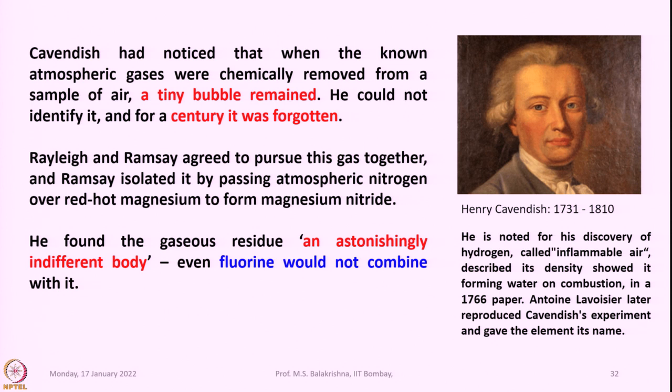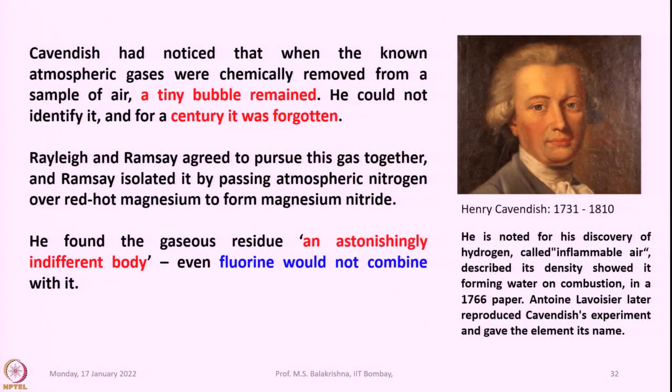That means Cavendish made that beautiful observation almost 100 years before Ramsey started looking into it. Rayleigh and Ramsey agreed to pursue this gas together, and Ramsey isolated it by passing atmospheric nitrogen over red-hot magnesium to form magnesium nitride. First oxygen was separated from atmospheric air and then the atmospheric nitrogen was passed over red-hot magnesium, forming magnesium nitride. After completion, he found the gaseous residue an astonishingly indifferent body — even fluorine would not combine with it.